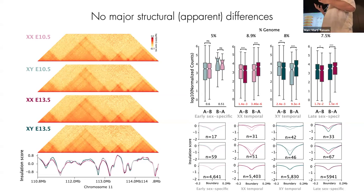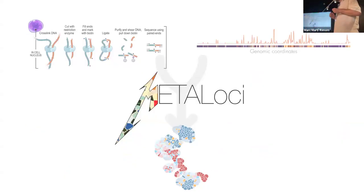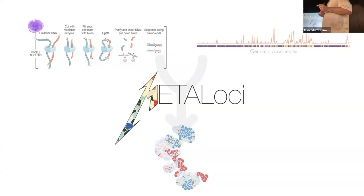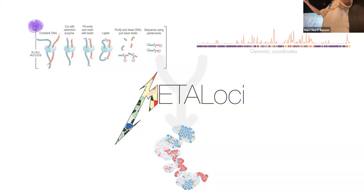We started thinking about what types of analysis we could do beyond the standard ones in 3D genomics to find out what is really happening. We developed something called MetaLoci. MetaLoci was developed by Juan, who is a Metallica follower — that's why it's called MetaLoci — but it also reflects a change in thinking: instead of looking at one locus at a time, we look at a combination of regions that are co-located in the same three-dimensional space.